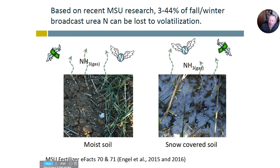Research in Montana found that anywhere from 3 to 44% of urea applied in the fall and winter was lost to volatilization. The idea that you can put it on in cold conditions and let it sit there is a myth — a lot is going to be lost.